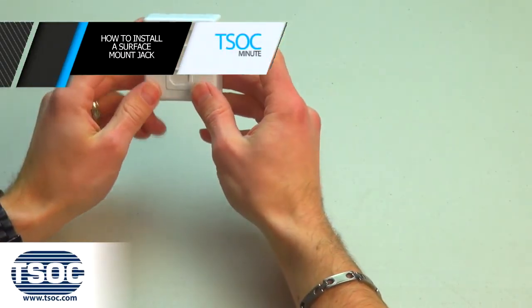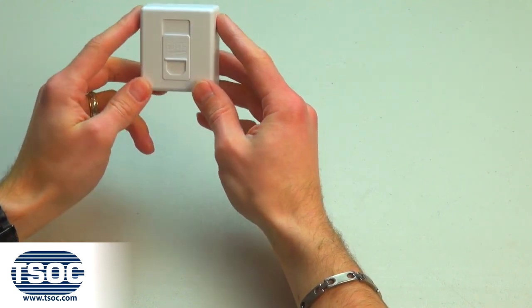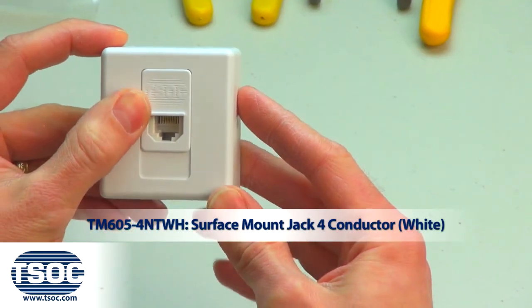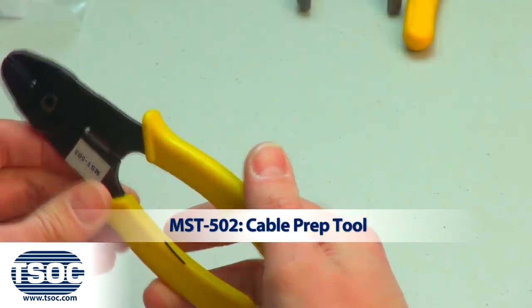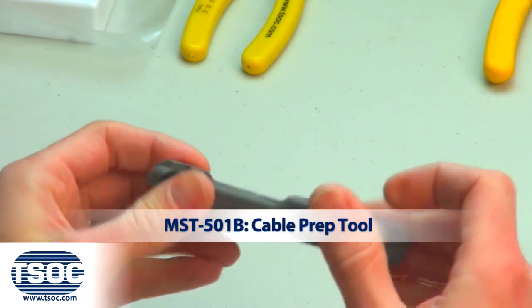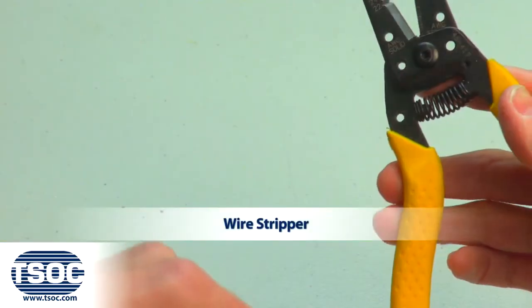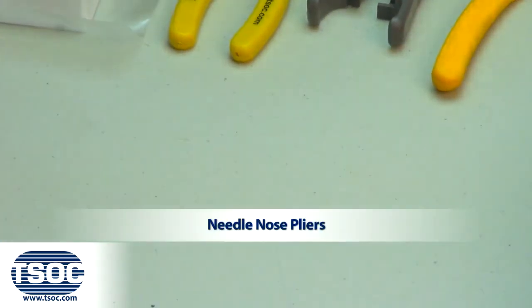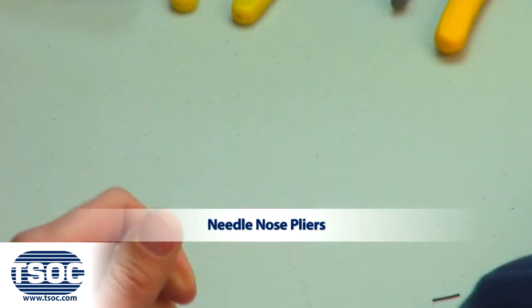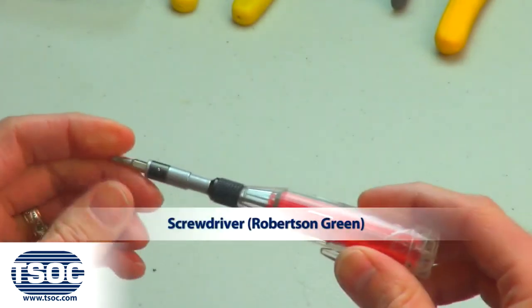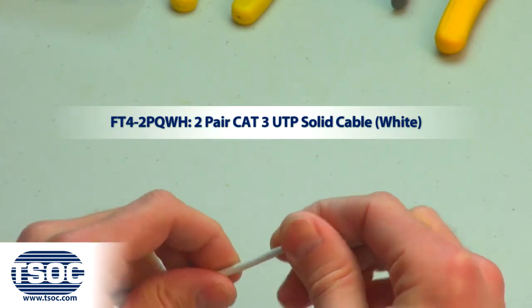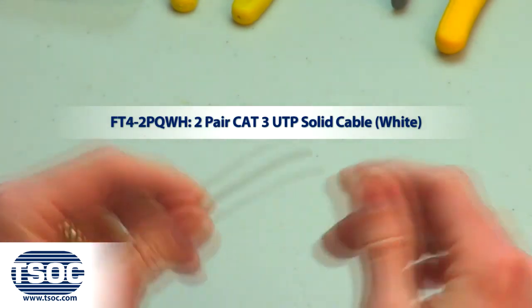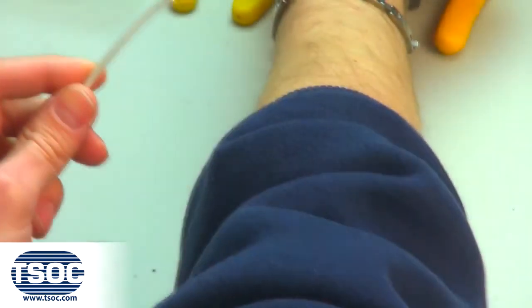How to install a surface mount jack. Materials required: surface mount jack, four conductor white cable, cable prep tool, wire stripper, needle nose pliers, Robertson screwdriver, two pair Cat 3 UTP solid cable white.